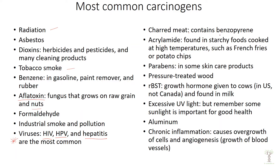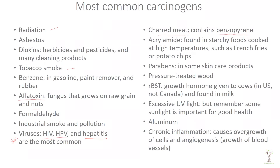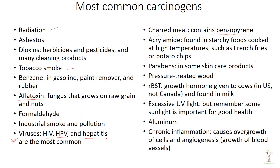These ones are a little bit sad: benzopyrene when you char barbecued meat. If you have really healthy gut bacteria, they can help get rid of some of those carcinogens, so you can have a little bit of charred meat. Acrylamide in starchy foods — when you cook starchy fatty foods like french fries and potato chips at really high temperatures, it produces a substance called acrylamide, which over time is going to mutate DNA.